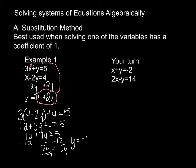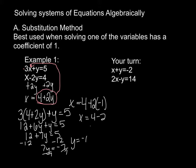The solution of a system of equations is an ordered pair because it represents where the two lines cross on a coordinate plane. Now I need to find what x is equal to, since I already have y. I have three options, but my personal favorite is to plug it into the equation that's already solved for x. So I get x equals 4 plus 2 times negative 1, which gives x equals 4 minus 2, so x equals 2. My ordered pair is (2, -1).